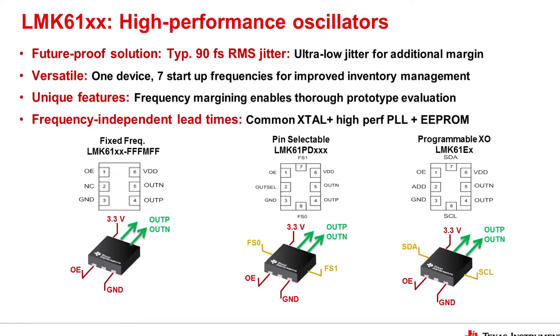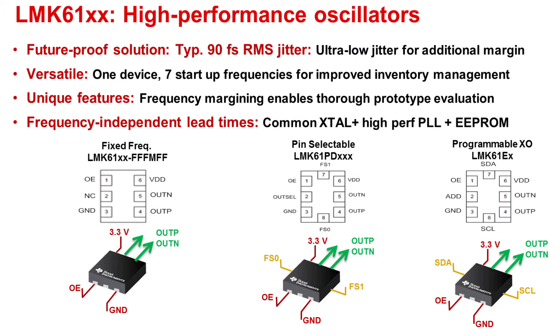Today, we're going to look at the system level benefits and competitive analysis of TI's latest LMK 6100 ultra-low jitter differential oscillator family. The LMK 6100 delivers 90 femtoseconds of RMS jitter and is perfect for any applications that require ultra-low jitter, such as data and telecom equipment, medical imaging, and any jitter-sensitive high-performance industrial application.